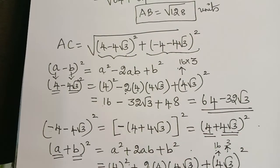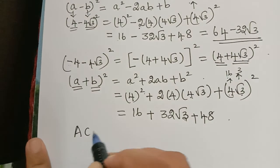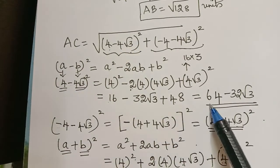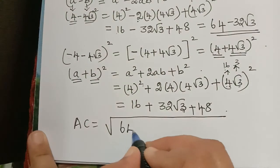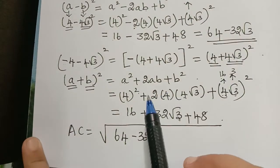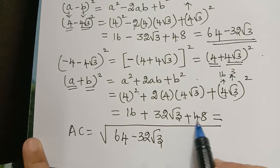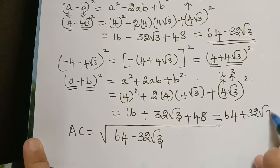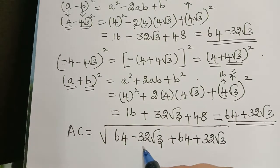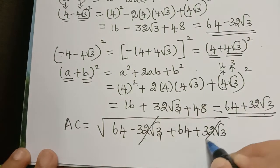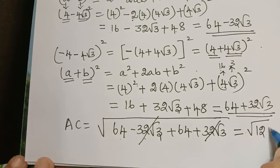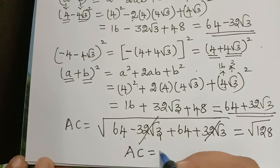Substituting both terms: AC = √[(64 - 32√3) + (64 + 32√3)]. The terms -32√3 and +32√3 cancel each other, and 64 + 64 = 128. Therefore AC = √128 units.